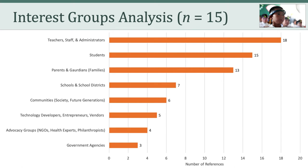Predictably, the most popular groups included teachers and students. All 15 matrices included both. The top category collapses teachers, staff, and administrators into one single group, which is why the count is 18, as many of you listed teachers and administrators separately. Next, we have parents and guardians, represented in 13 matrices. Other categories included the schools themselves, the larger community and society, technology developers and entrepreneurs, advocacy groups, and government agencies.